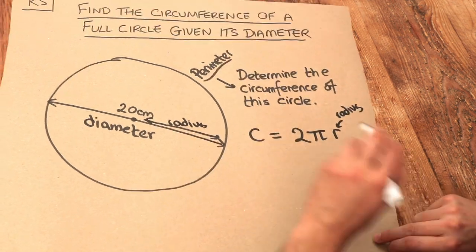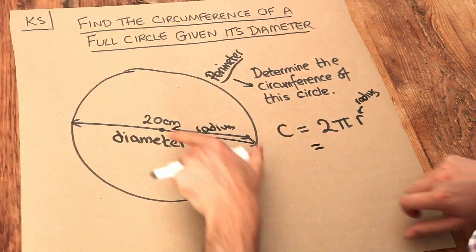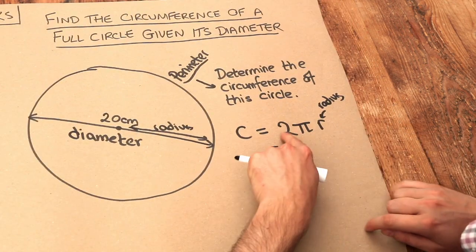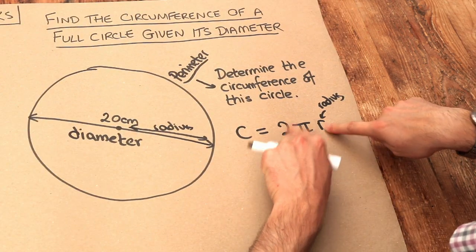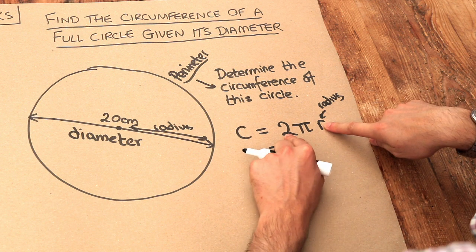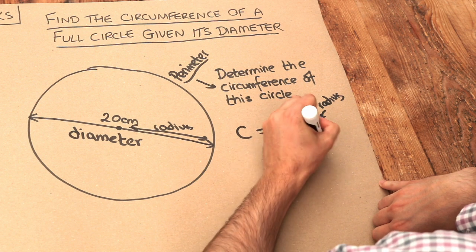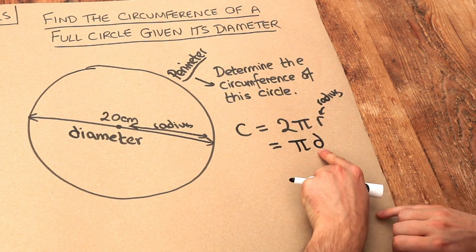But there's a second formula for the circumference of a circle. Notice that 2 lots of the radius would be the diameter. So I can replace this 2 and the radius, the 2 lots of the radius, with just d for diameter. So an alternative formula is pi multiplied by the diameter, d.